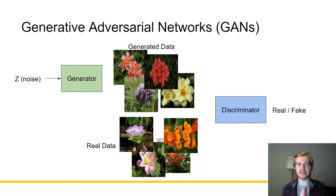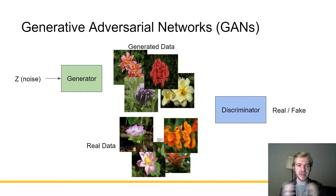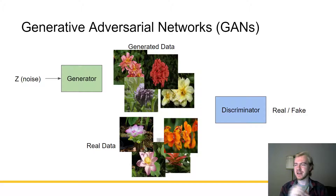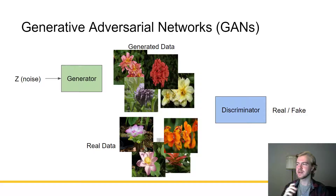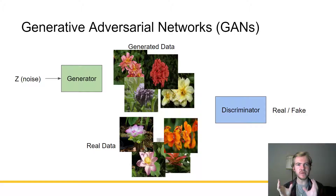First, I'd like to go over what generative adversarial networks are. Generative adversarial networks, also called GANs, are a type of deep learning architecture which helps a network to generate images or other pieces of data — but for the topic of this presentation, just images. The way this works is it has two competing networks: a discriminator and a generator.